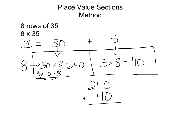So to do that, we have just a little bit of addition. And we find that, in fact, we'd have to tell the principal we need 280 chairs. That's how place value sections works.